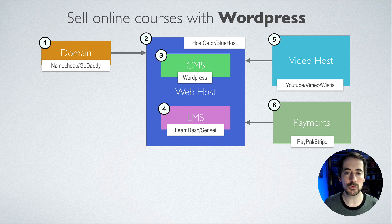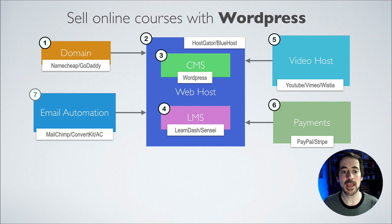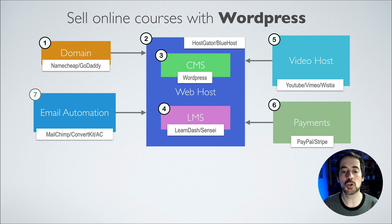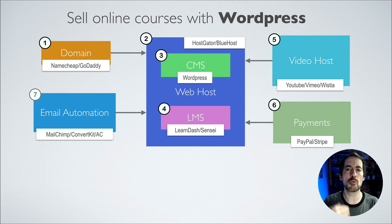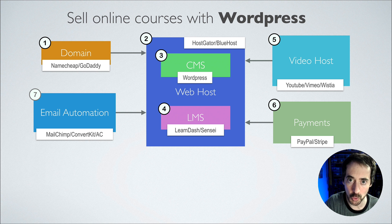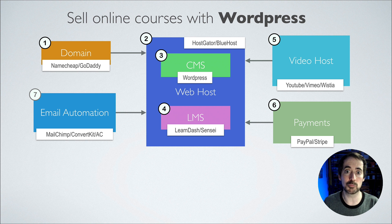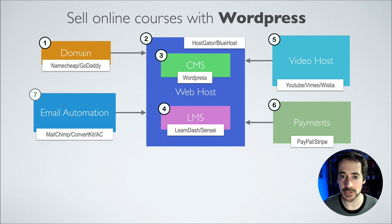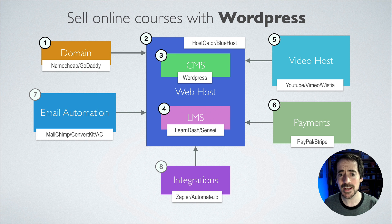With these six elements you could start hosting and selling online courses using WordPress. There are also four optional but helpful elements. The first is email automation — integrating with ConvertKit, Mailchimp, ActiveCampaign, or Infusionsoft to send marketing emails, build your email list, and promote courses. It's likely that before you even install WordPress, you should have been building an email list so you have somebody to promote your course to, unless you already have a huge social media audience.